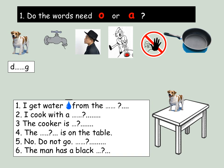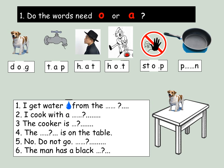Number 1. Do the words need O or A? Dog. O. Tap. A. Hat. A. Hot. O. Stop. O. Pan. A.